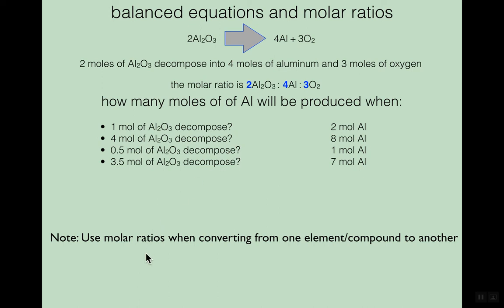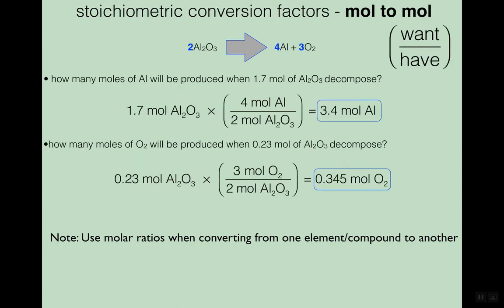We'll use molar ratios as conversion factors to convert from one compound or element to another. These coefficients are right in your equation — you don't need the periodic table for them. For example: how many moles of aluminum will be produced if you have 1.7 moles of aluminum oxide? Start by writing 1.7 moles of aluminum oxide and find the conversion factor relating aluminum oxide to aluminum.